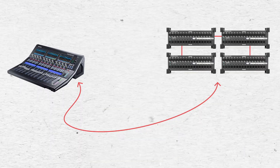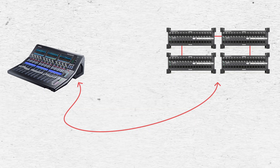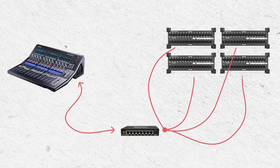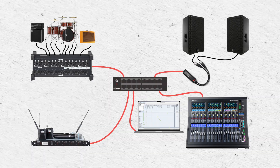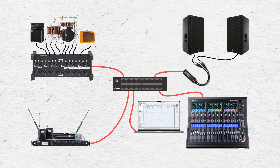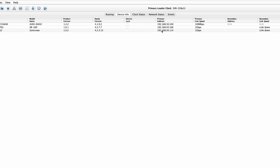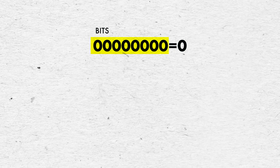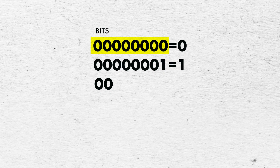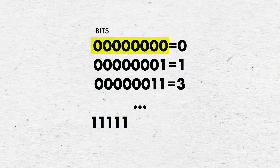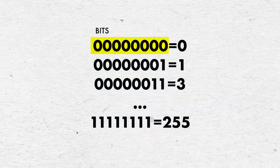In some cases, we could just connect the mixer directly to the stage box, but for the sake of understanding how the system works, let's use a standalone network switch. Let's also connect a laptop to the switch and open up the free Dante Controller software. We can see in Dante Controller that each device now has an IP address. Each field in an IP address can range from 0 to 255 — a total of 256 values, represented by 8 bits which are either 0 or 1. All 0s equals 0, all 1s equals 255, and every other combination represents a number between 0 and 255.